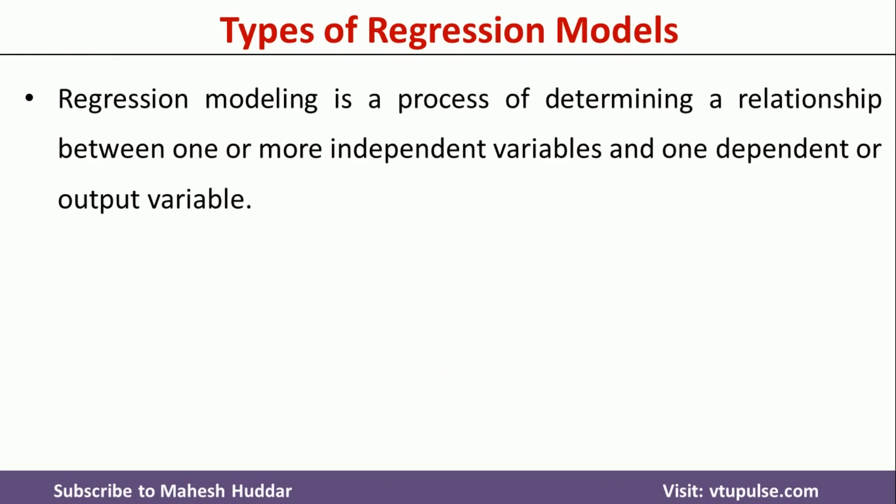Regression model is a process of determining a relationship between one or more independent variables and one dependent or output variable. If you have one or more independent variables and you know the value of those independent variables, we want to get the value of the dependent variable, or the output variable.